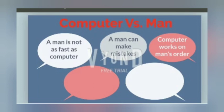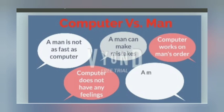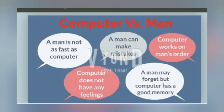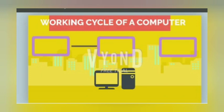It is a machine, but man does not need any order from anyone. Computer does not have any feeling or emotion — it does not cry or laugh. It is free of feelings and emotion. And the last difference is: a man may forget, but computer has a good memory. A man can forget things, but the computer never forgets. It keeps things saved — your photos and videos saved.